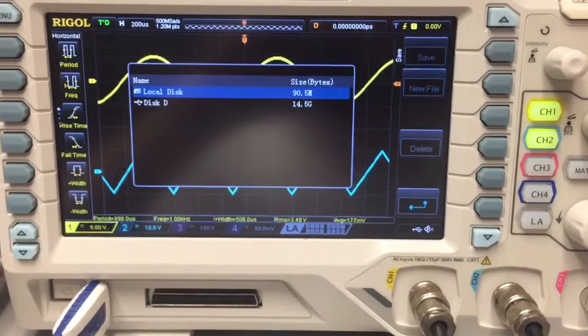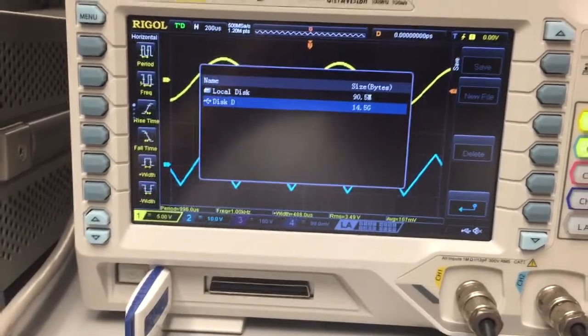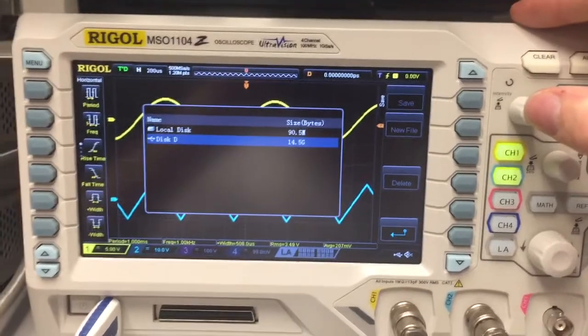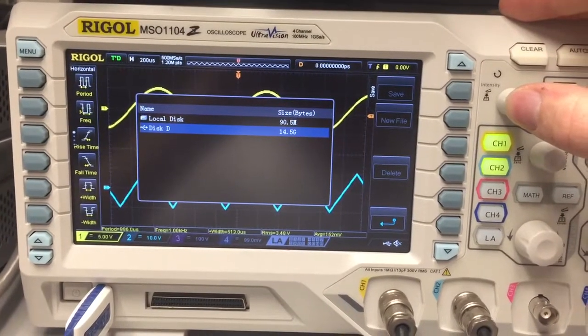And now you're going to pick where you want to save it. So I'm going to save to disk D, which is my USB drive. Local disk is the scope itself, so we're going to save to disk D.